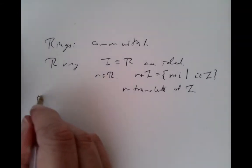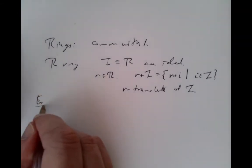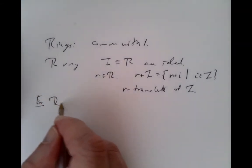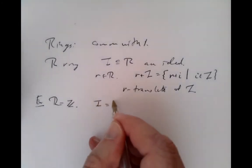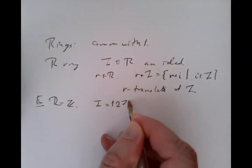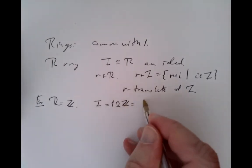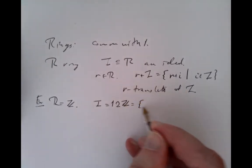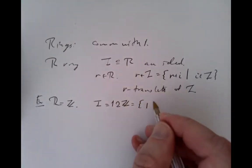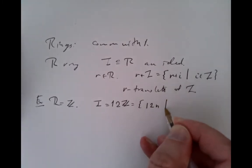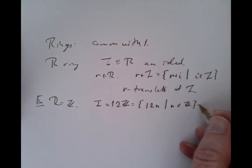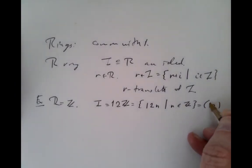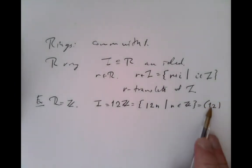Let's look at a simple example of constructing a translate. If our ring is the integers and our ideal inside that ring is the multiples of 12 — that is, the set of numbers 12 times n such that n is any integer — another notation for that would be putting round brackets around the number 12 to mean the ideal generated by 12.